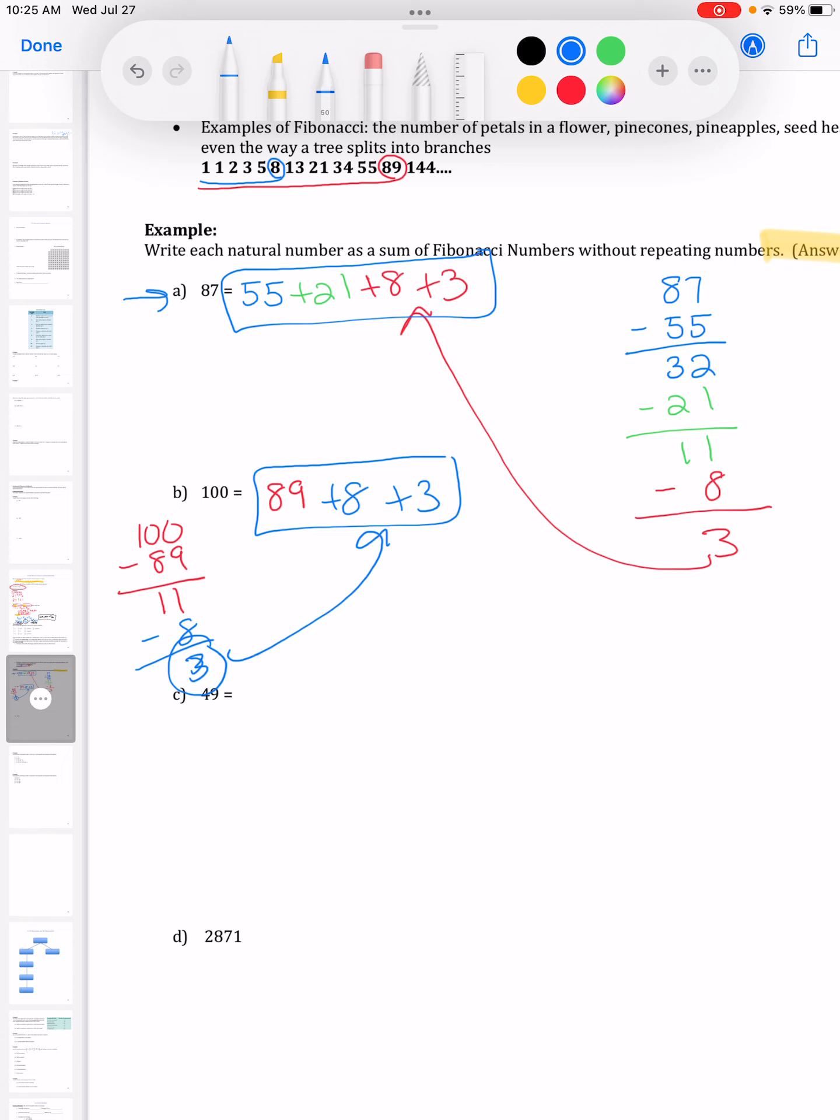What I want you guys to do is hit pause and try doing 49. Coming back from our pause, the biggest Fibonacci number that I could use to start with would be 34. Then I've got 15 left over. The biggest Fibonacci number is 13, and I'm left with 2. That is a Fibonacci number, so I'm just going to use that one. So 34 plus 13 plus 2 - that would be my final answer.